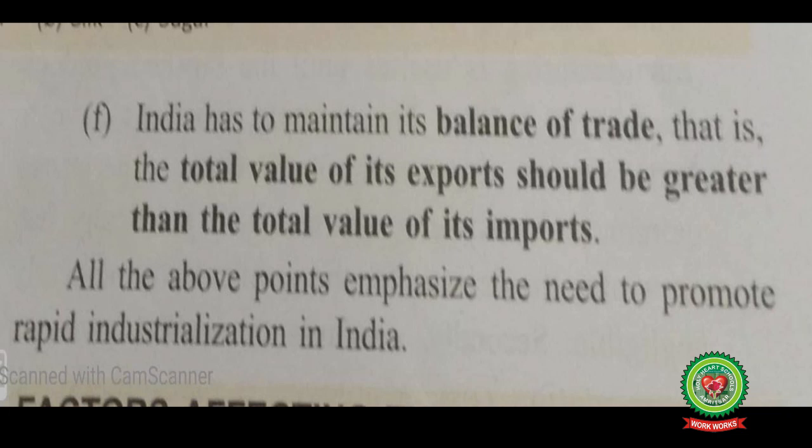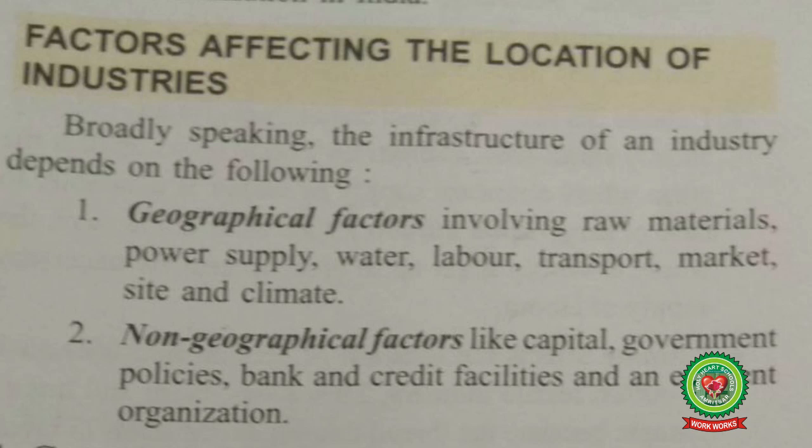Our second topic is factors affecting the location of industries. Industries are set up under two factors: first, geographical factors, and second, non-geographical factors. Geographical factors include raw material, power supply, water, labor, transport, market, site, and climate. Non-geographical factors include capital, government policies, bank and credit facilities, and an efficient organization to help set up the factory in a particular area.